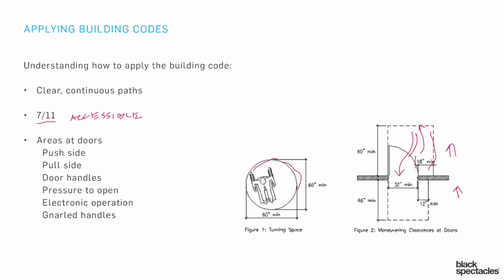So I need that 18 inches on the door handle side — on the pull side. When I'm doing that same maneuver on the push side, I still need space, but I just don't need quite as much. So the mandate is 12 inches.